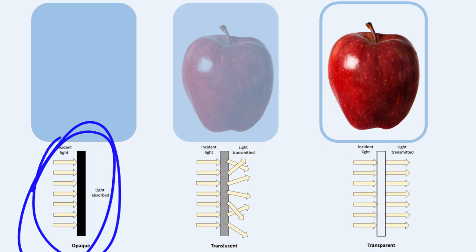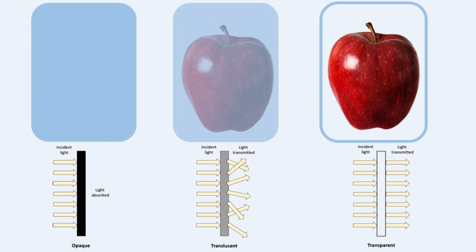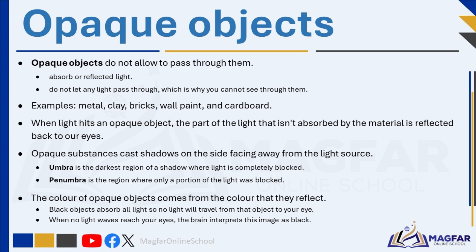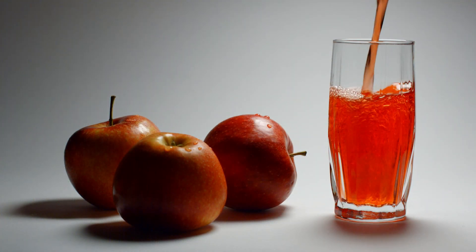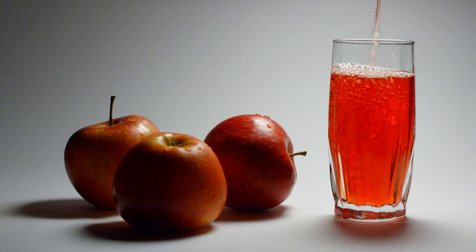When light hits an opaque surface, some of the light's energy is absorbed by the material, which can cause the material to warm up. The part of the light that isn't absorbed is reflected back to our eyes — this reflected light is what allows us to see the object's color and texture. For example, a red apple appears red because it reflects red light while absorbing other colors.